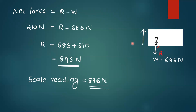Net force equals R minus W. We have R minus W equals 686 Newton for the weight. Net force F equals M times a equals 210 Newton. Therefore R equals 686 plus 210, that will be equal to 896 Newton. Scale reading equals 896 Newton.